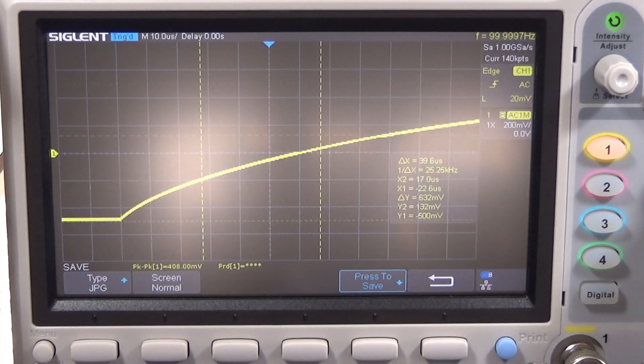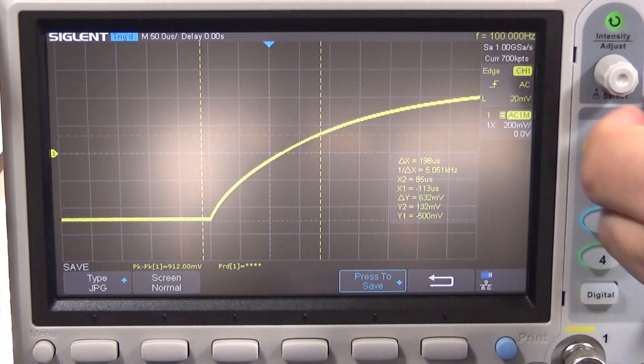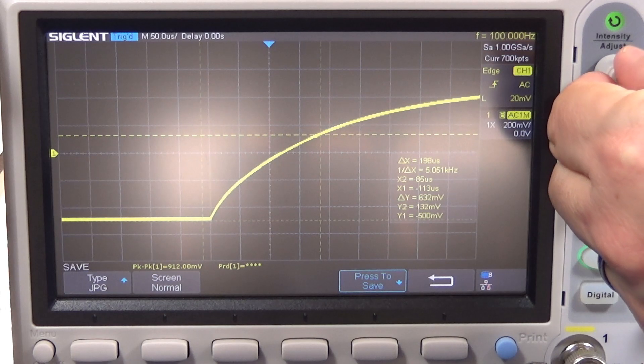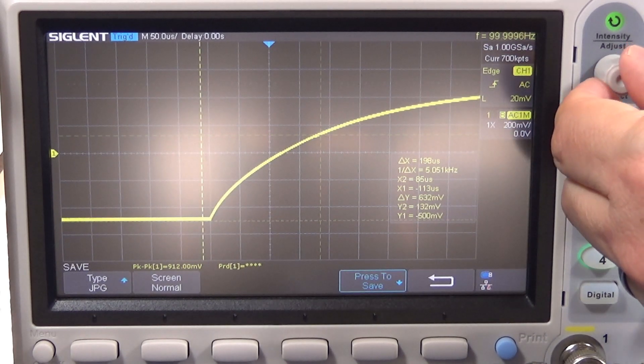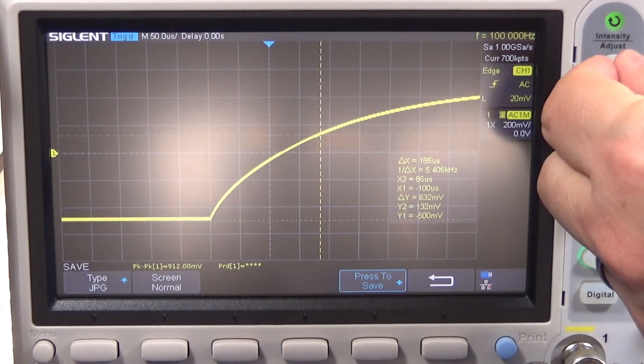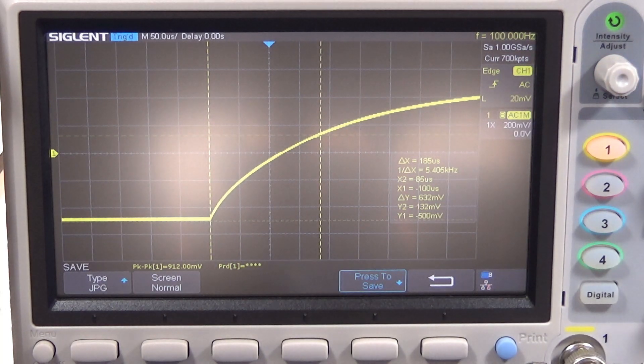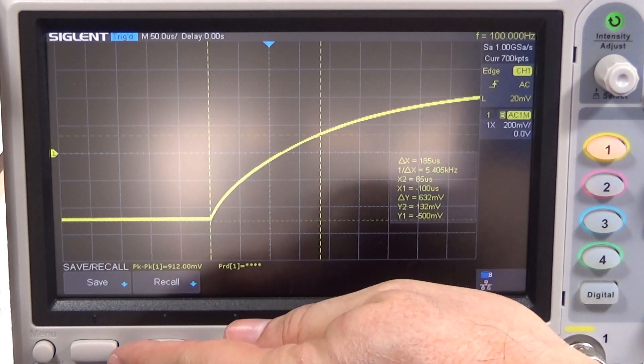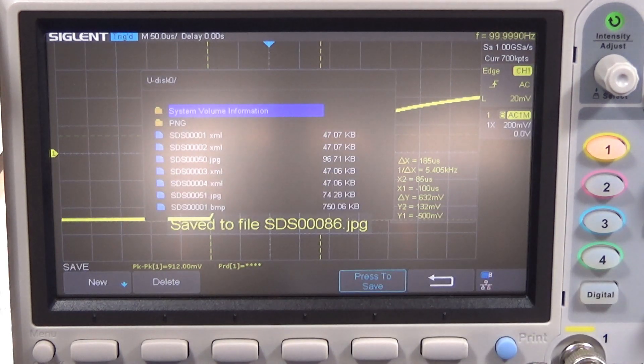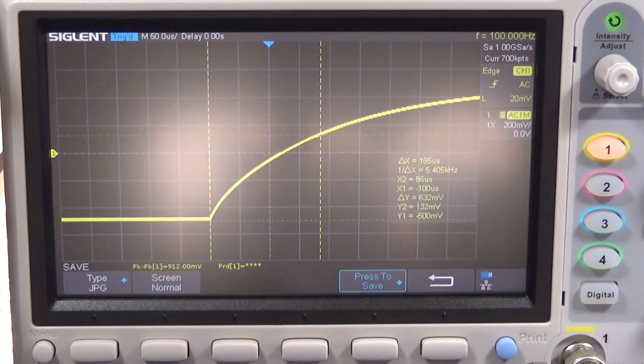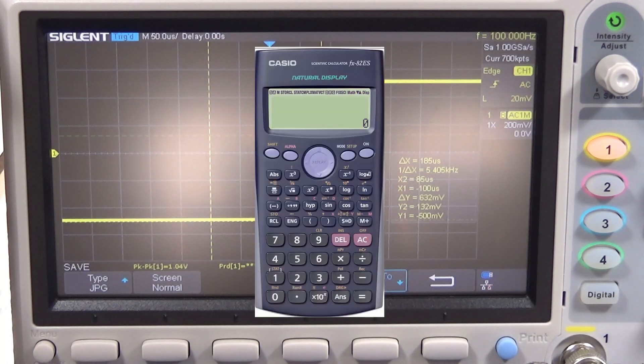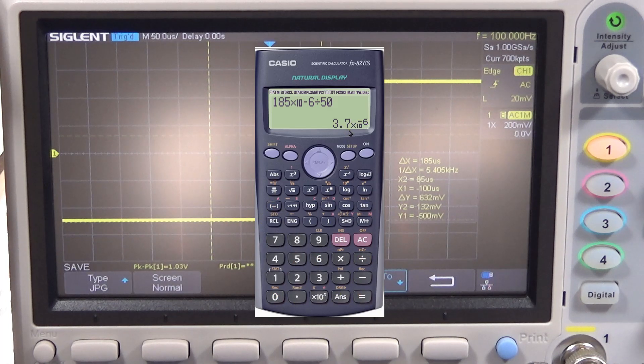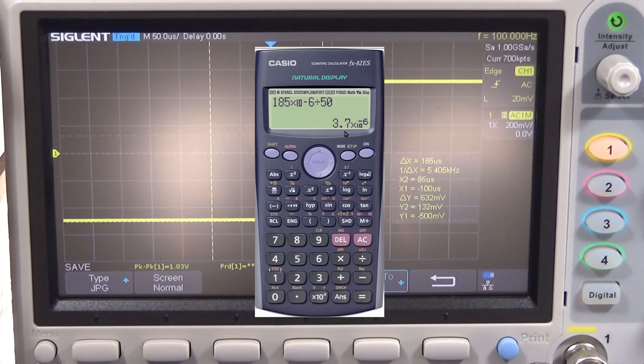185 microseconds divided by 50 ohms equals 3.7 microfarads. Probably this capacitor is 4.7 microfarads.